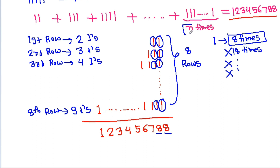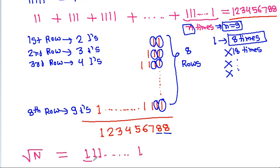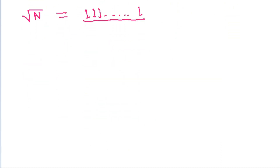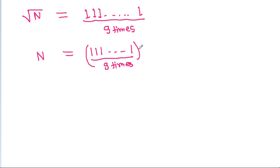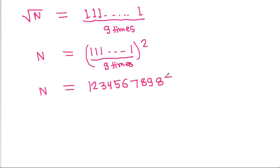So for this n: n is equal to 9, and √n equals 111111111 (nine 1s). Therefore n equals 111111111 squared, which gives n = 12345678987654321.